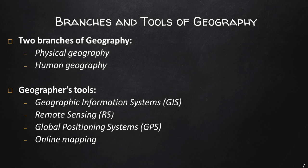Physical geography is concerned with the natural environment. Many physical geographers also look at how humans have altered the natural system. Physical geographers study the Earth's seasons, climate, atmosphere, soil, streams, landforms, and oceans. At CWI, we offer a physical geography course called Geog 100.